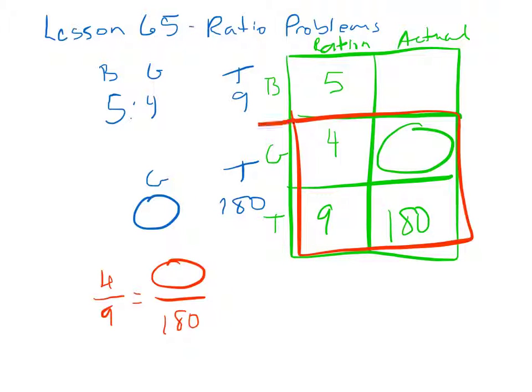So just using this part of the chart, we can figure out exactly how many girls there were. So, we multiply 4 by 180. That would be 720. Divide that by 9. 72 divided by 9 is 8. Then you have the 0. So there was a total of 80 girls in the gym.